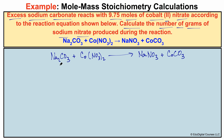Balancing the equation: we have two sodiums on the left and two sodiums on the right. We have two nitrogens on the left and two nitrogens on the right. We have one carbon on the left and one carbon on the right. We have one cobalt on each side. For oxygens: 3 plus 2×3 = 9 on the left, and 2×3 plus 3 = 9 on the right. So our chemical equation is now balanced, and we can start the stoichiometry process.